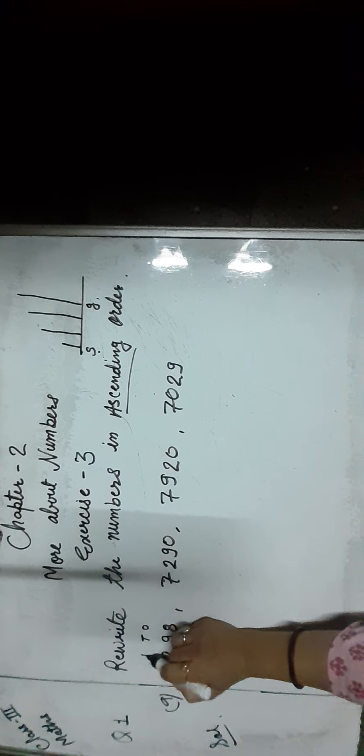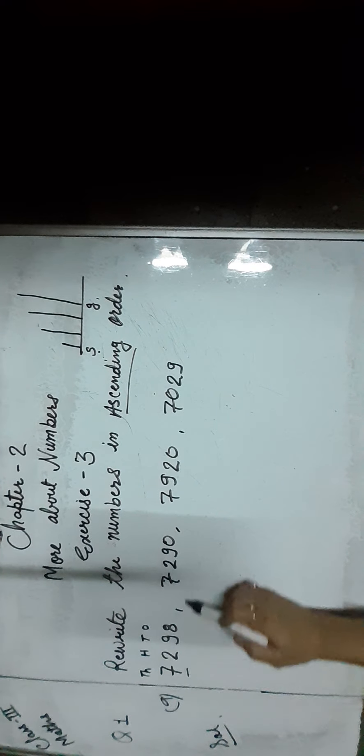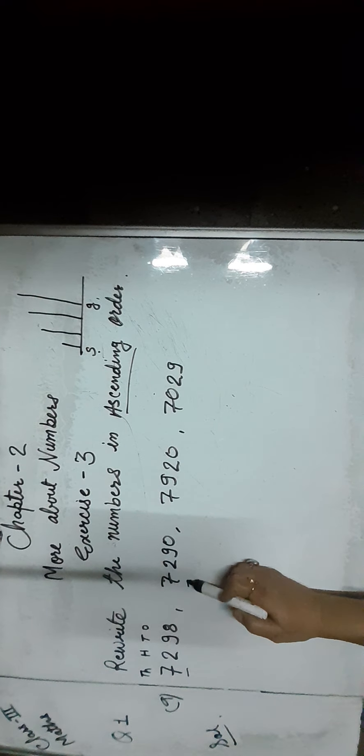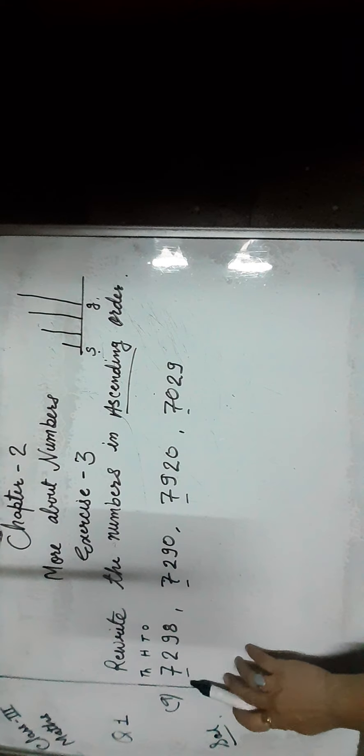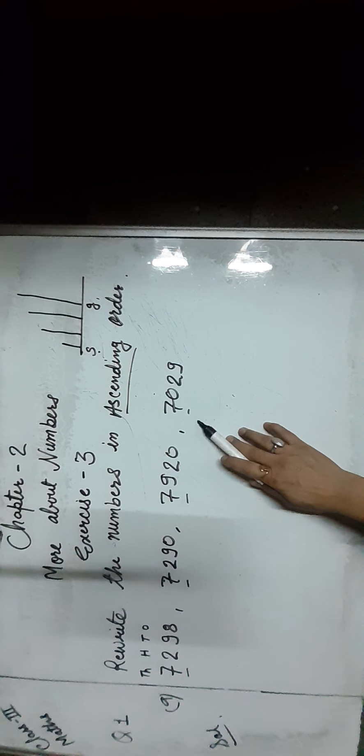The place values are 1s, 10s, 100s, and 1000s. Now as you can see, all the 1000s place digits are the same — that is 7.